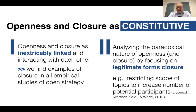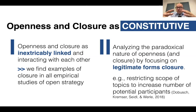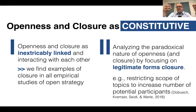Once you are aware that wanting to be more open will probably require relying on certain forms or types of closure, you can come up with strategies. For example, you might restrict the scope of topics discussed in a certain open strategy process, and that restriction might then allow you to increase the number of potential participants. Alternatively, you might reduce the number of participants but widen the scope of topics discussed. To achieve both at the same time, you might need very sophisticated open strategy making tools that enable you to open up on both dimensions and achieve the legitimate form of openness you want.